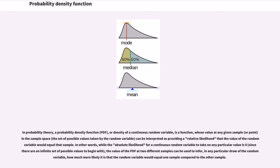While the absolute likelihood for a continuous random variable to take on any particular value is zero, the value of the PDF at two different samples can be used to infer, in any particular draw of the random variable, how much more likely it is that the random variable would equal one sample compared to the other sample.